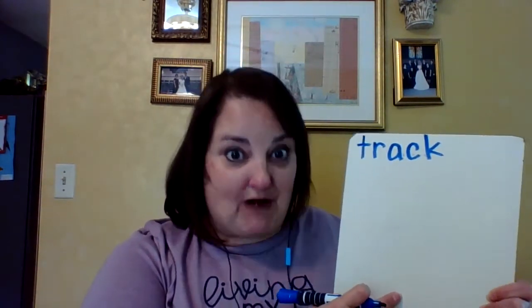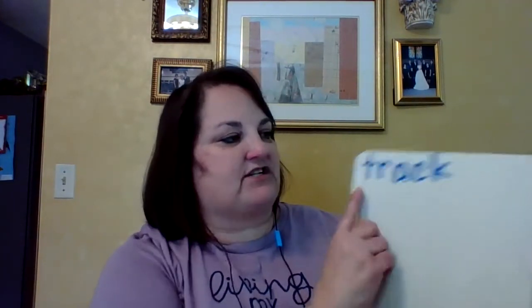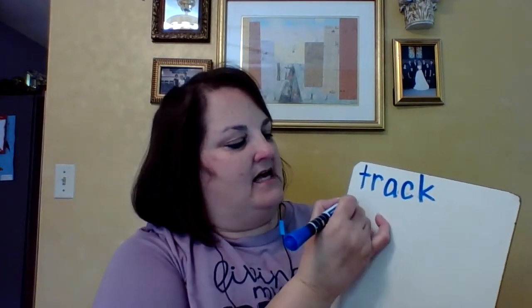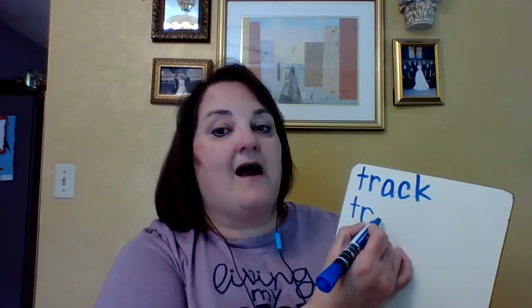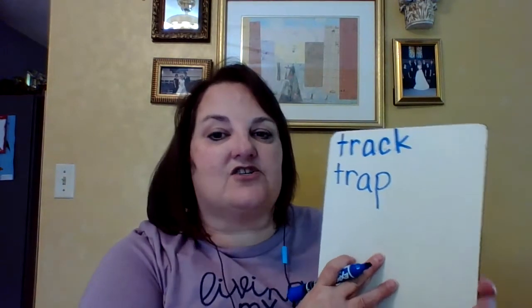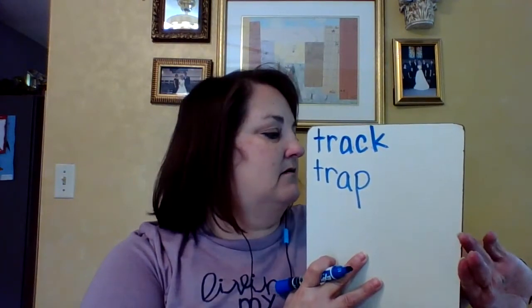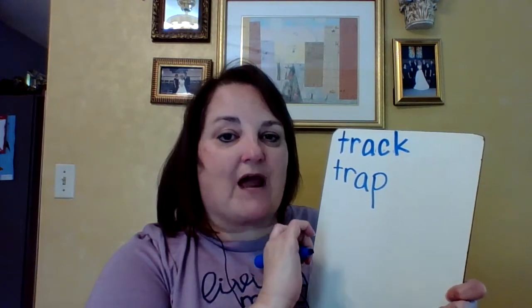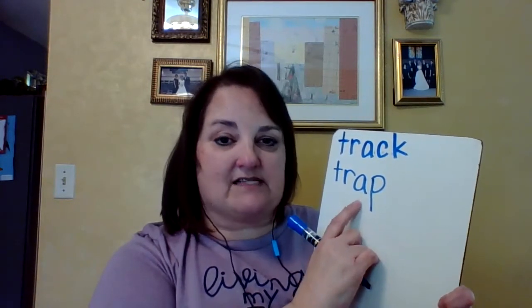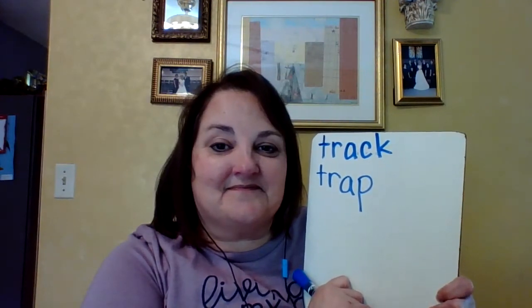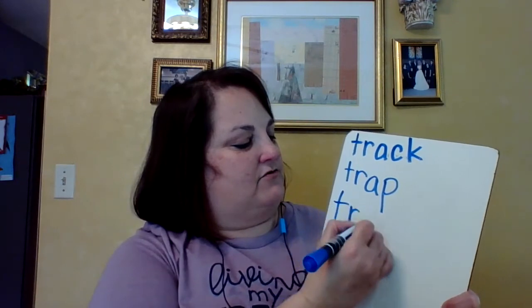The next word we want to write is the word 'trap.' If I see a mouse, I'm going to set a mouse trap — for real! Let's stretch out 'trap': T, R, A, P. Do you see the part that's different? Now let's try changing 'trap' to 'trip' — don't trip and fall! What part do you think is going to change from 'trap' to 'trip'? You're right, this vowel sound is going to change. Let's see if your 'trip' looks like mine: T, R, I, P.